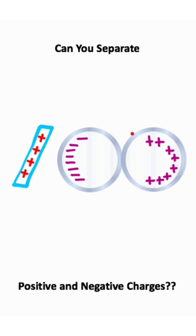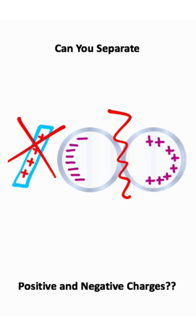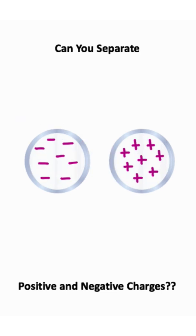But now that I have it in this state, I can take the two spheres and separate them, and then get rid of this rod. What that's going to do is leave me with a negatively charged sphere on the left side and a positively charged sphere on the right side.